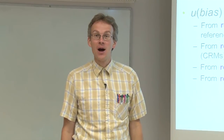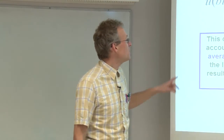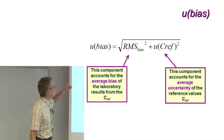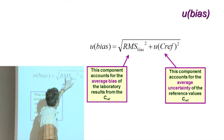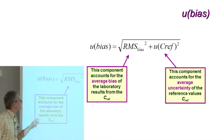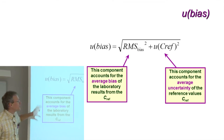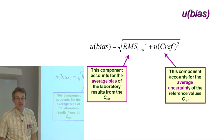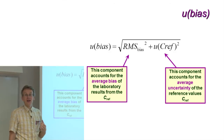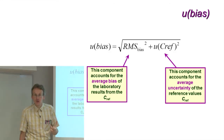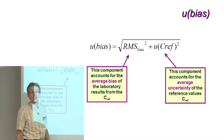Let us now see how we calculate this bias component. The main equation is presented here. U_bias is found as a combination of two uncertainty components. The RMS_bias accounts for the average bias in your laboratory — it is basically the averaged bias value, and I will show on the coming slides how it is calculated.